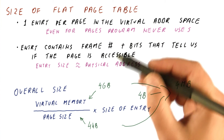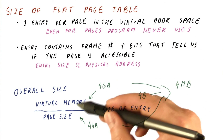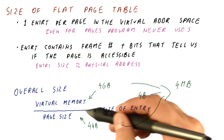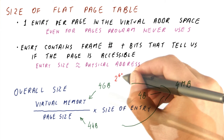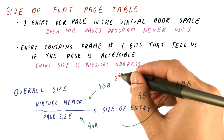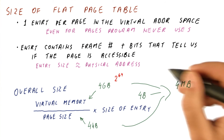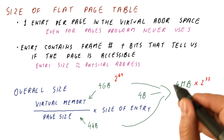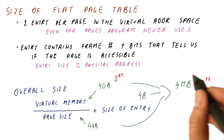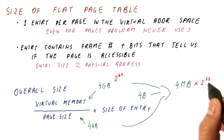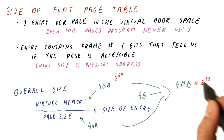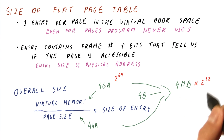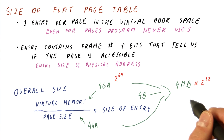The other problem with the flat page table is that if the virtual memory is a 64-bit address space — so if the virtual memory is 2 to the 64th bytes — then we are talking about a page table that is 4 billion times this, which is much larger than the memory we actually have.